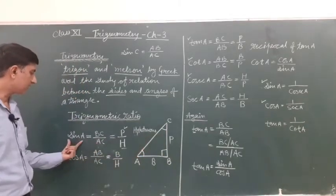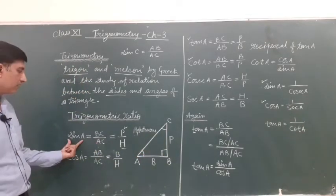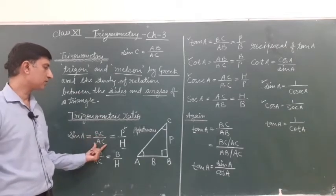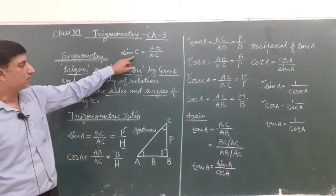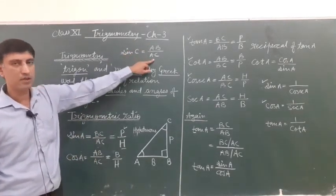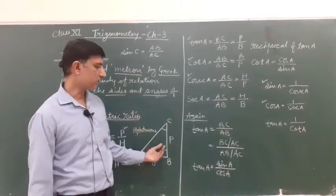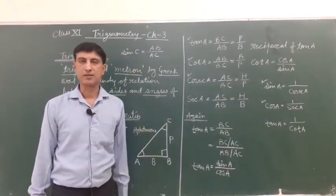So there is this difference. sine A is represented by BC upon AC, but sine C is equal to AB upon AC. So in this way, we can change according to condition.